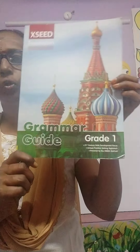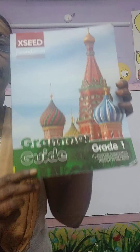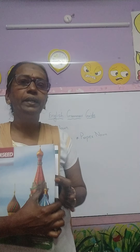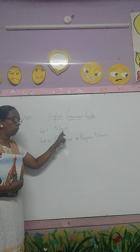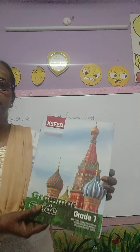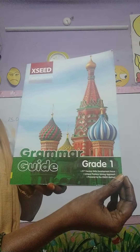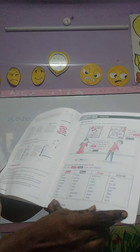In English we have one more book. Can you see this green color book? Grammar Guide. Today we are going to learn LP 192. Already we have learnt nouns in our blogs — common and proper noun. Again we are just going to recollect the things. We are going to write the PQ and worksheet. See, this is the grammar guide book. You can take page number 1.